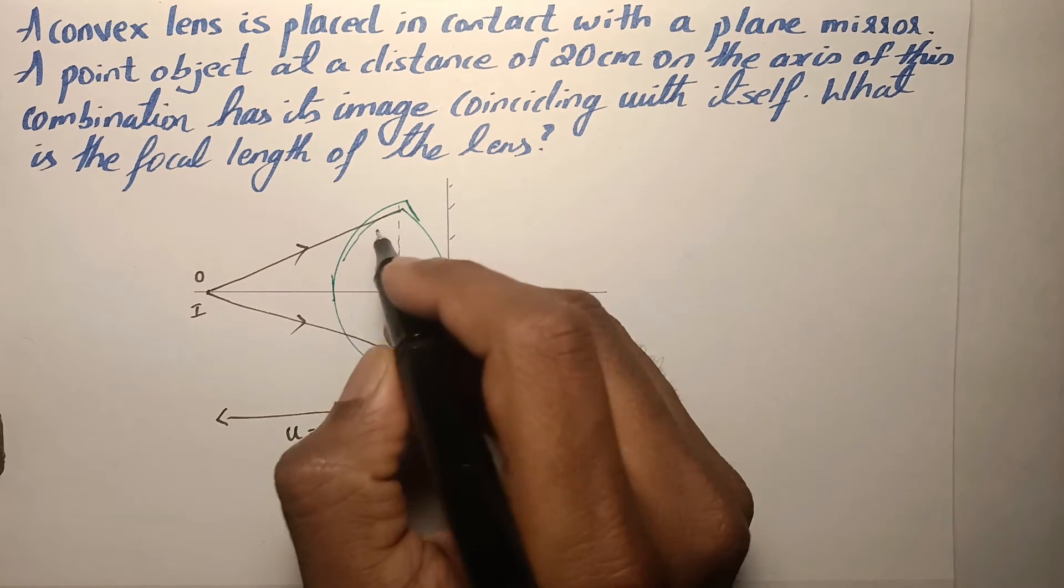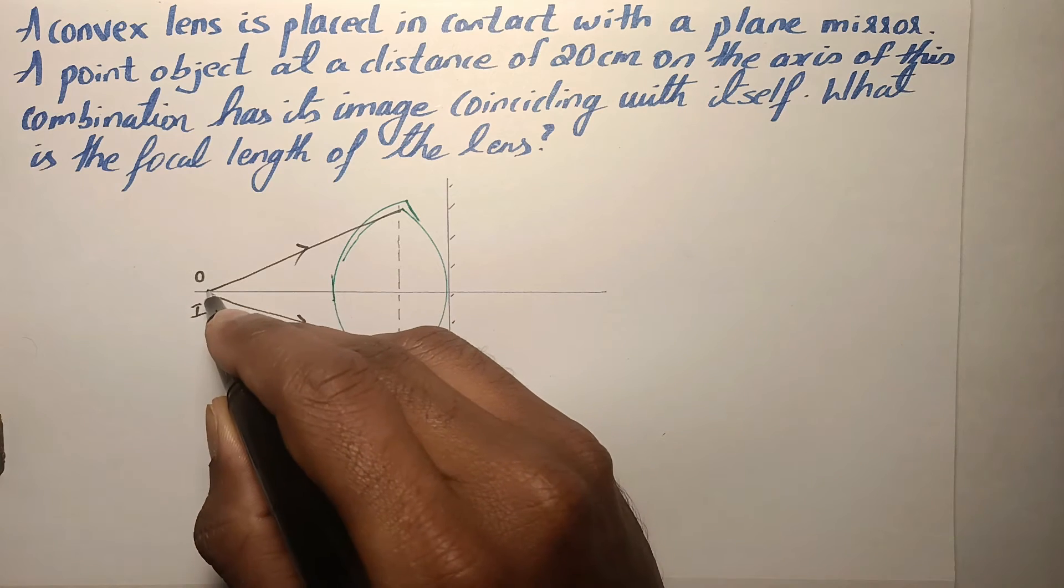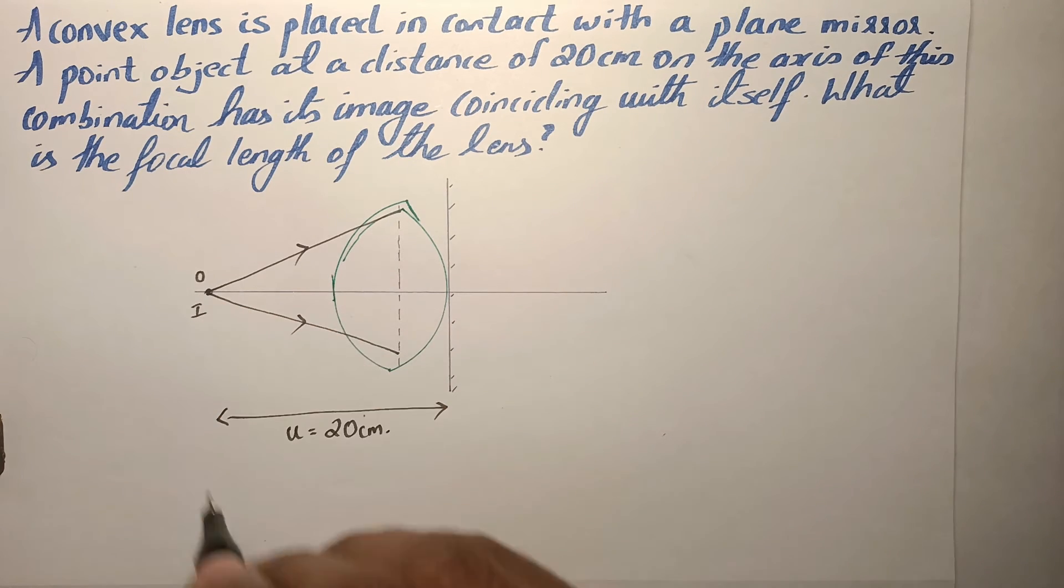Because from a mirror, light always gets reflected back. But the reflection is in such a way that it traces its path back to this position and thus the image is formed.